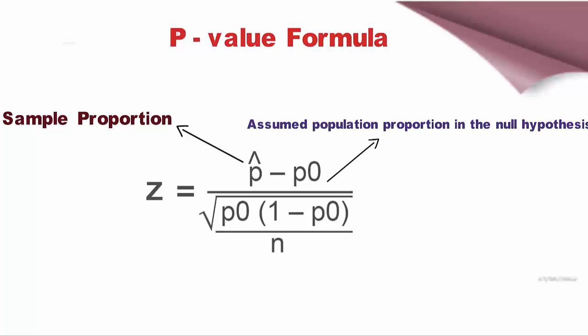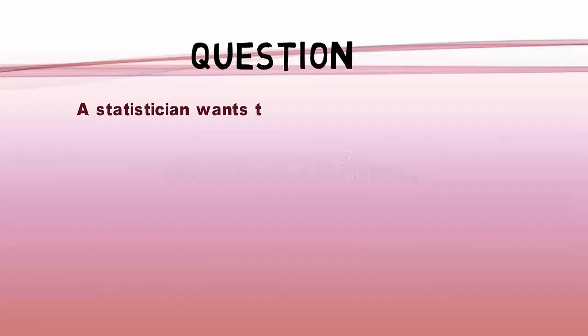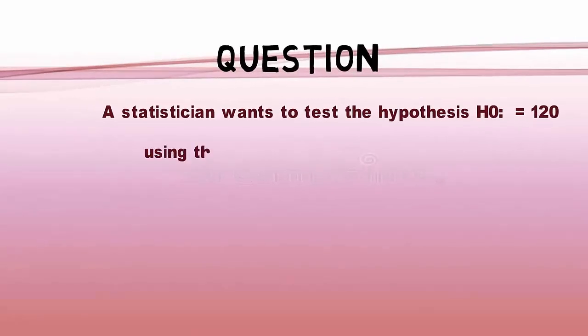P-value example. An example to find the P-value is given here. A statistician wants to test the hypothesis H0: mu equals 120 using the alternative hypothesis H-alpha: mu greater than 120.